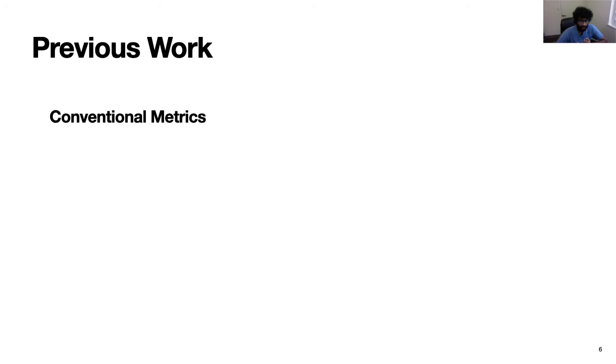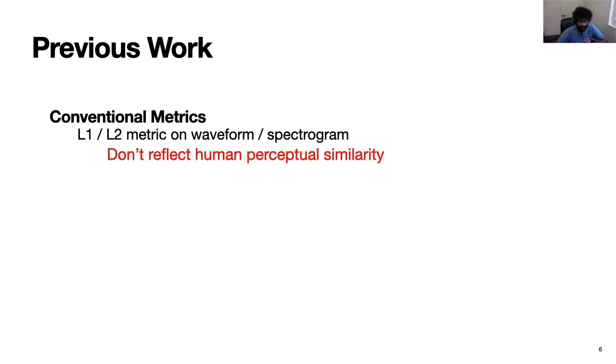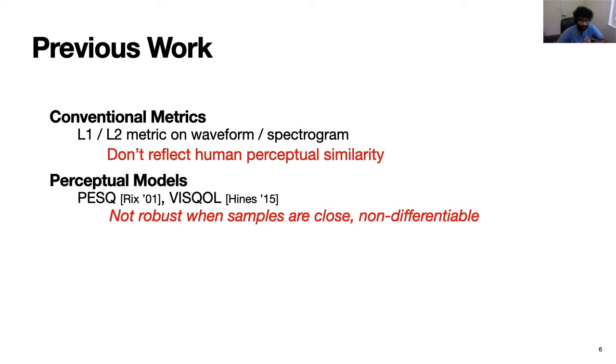As we saw, conventional metrics like L1, L2 are just numerical differences that don't really reflect human perception of similarity. Very early perceptual models like PESQ and VISQOL were inspired by the way human ear processes signals, especially in the middle ear. But these approaches have their own limitations. For one, they're not robust to audio samples that are close and have very subtle differences like in the example that we just heard. And two, they're non-differentiable.